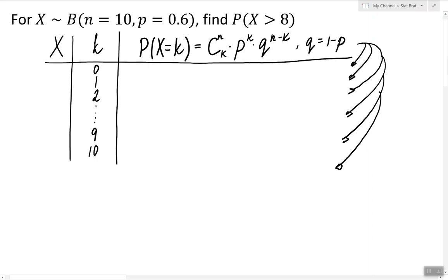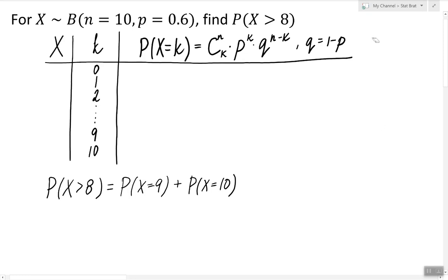However, before we start doing all that, let's take a look at the question. The question is simply asking to find the probability of X being greater than 8. So we don't have to find all the probabilities, therefore we don't have to fill up the entire table. We simply have to find the probability of X being equal to 9 and the probability of X being equal to 10. So let's go ahead and find those.